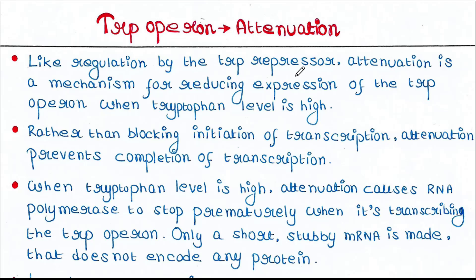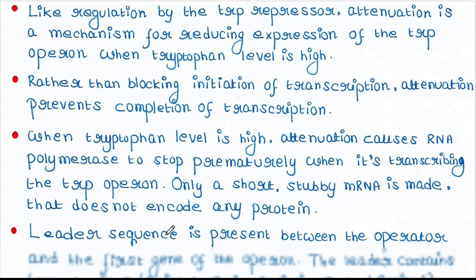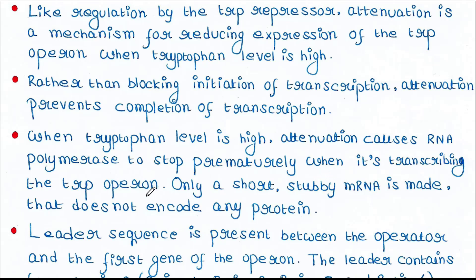Like regulation by the trp repressor, attenuation is a mechanism for reducing expression of the trp operon when tryptophan level is high. Rather than blocking initiation of transcription, attenuation prevents completion of transcription. In our previous case, the repressor blocked initiation of transcription, but in this case it is different. When tryptophan level is high, attenuation causes RNA polymerase to stop prematurely when transcribing the trp operon.